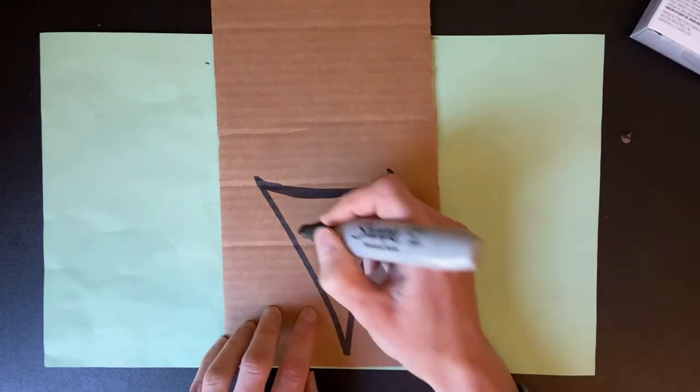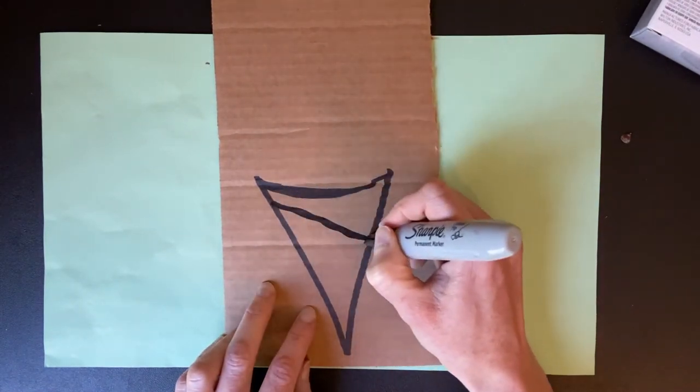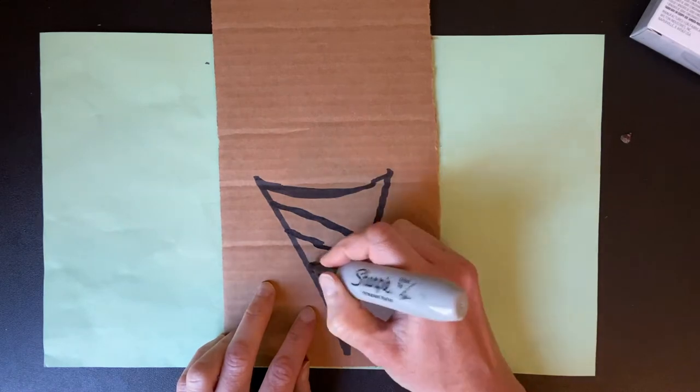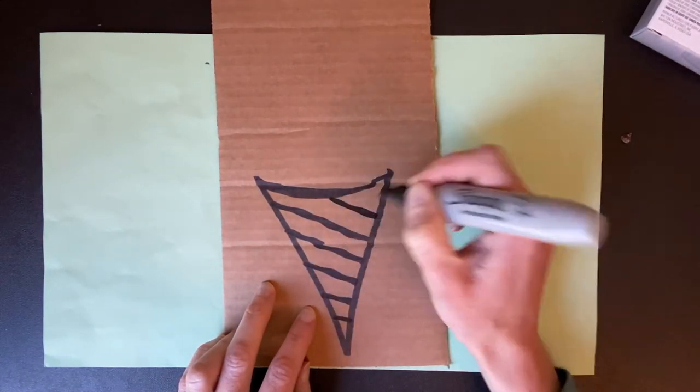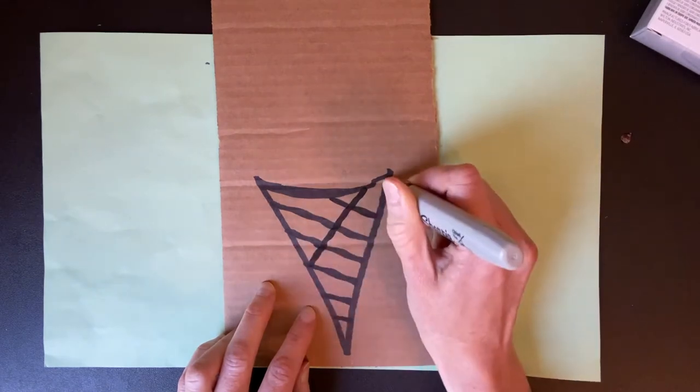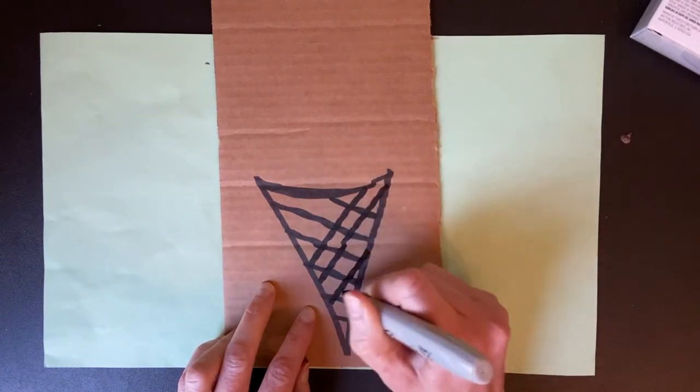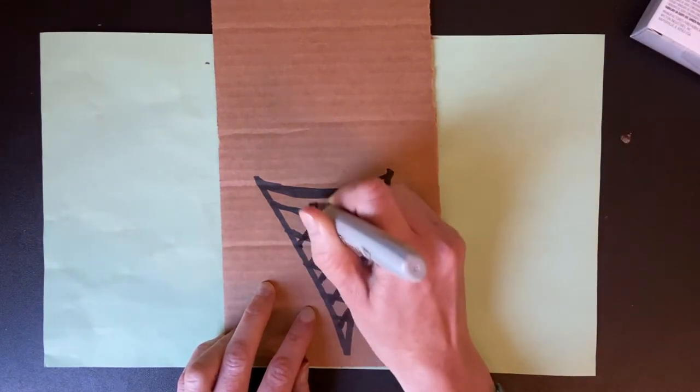And then what I'm going to do is starting on one side, I'm going to draw lines that go diagonally down one way. And boys and girls, if I ever go too fast, you can pause the video, right? And then I do diagonal lines the other way.